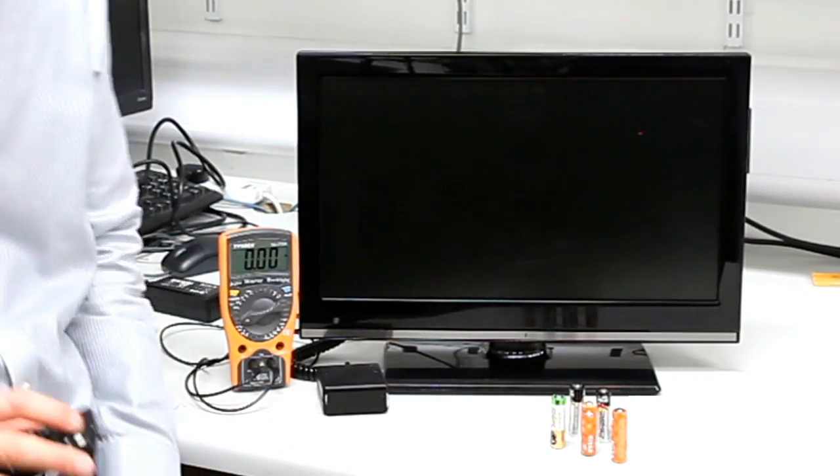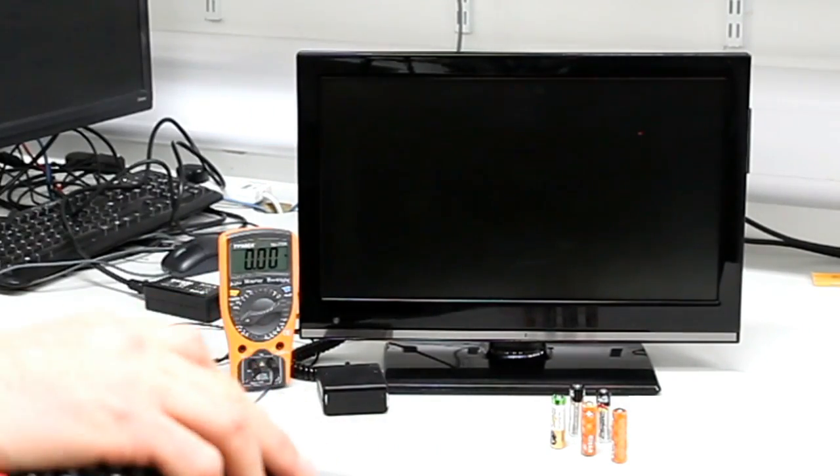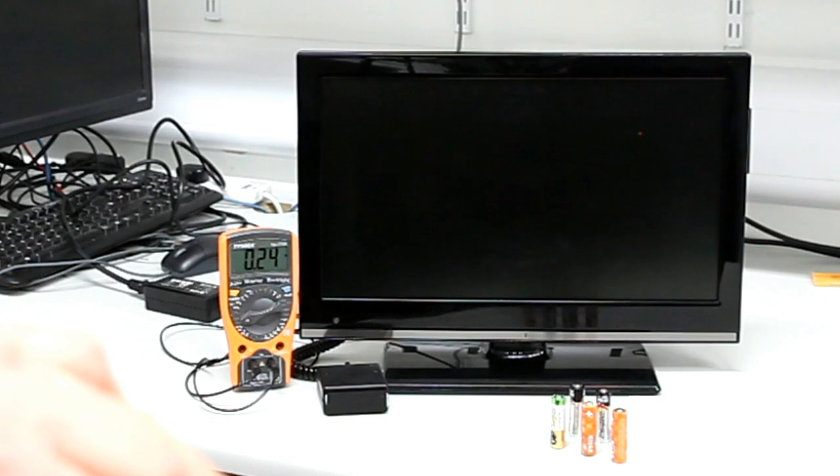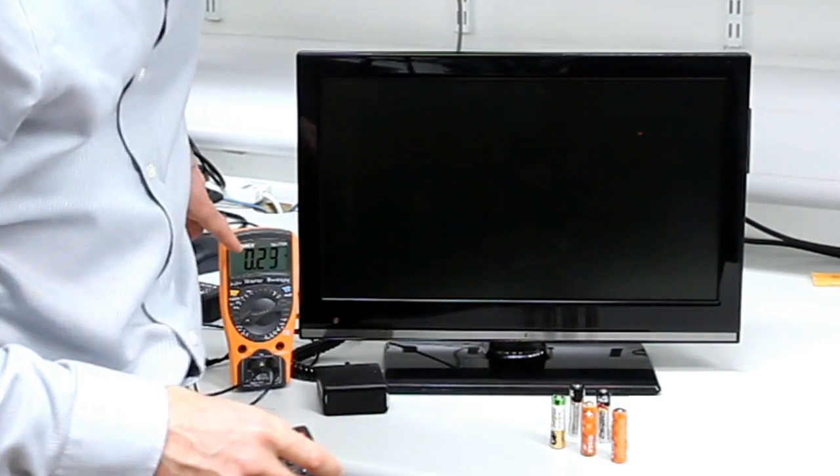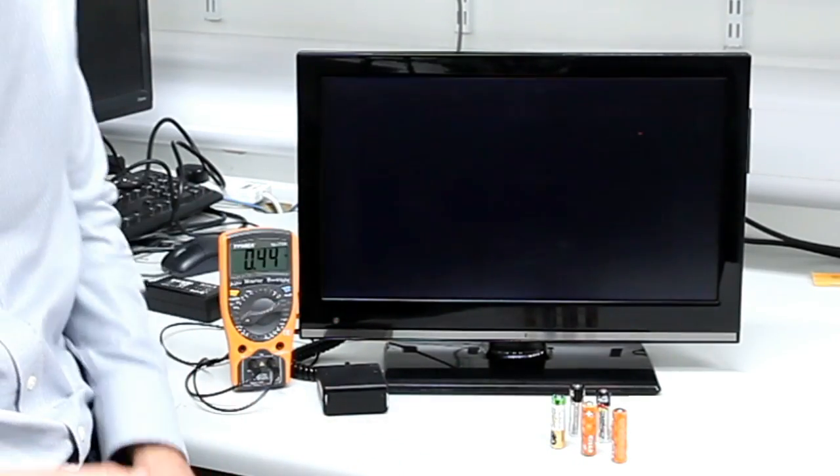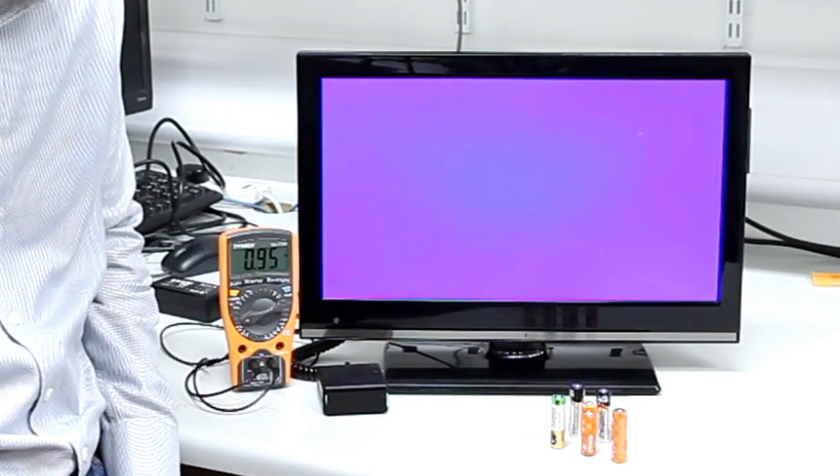I can now use the remote to turn the TV on. In fact, what I'm doing in this rough mock-up is I'm first activating our zero power receiver, which wakes up the TV's standby receiver. Now the TV is operating as normal, and I can turn it on as normal.